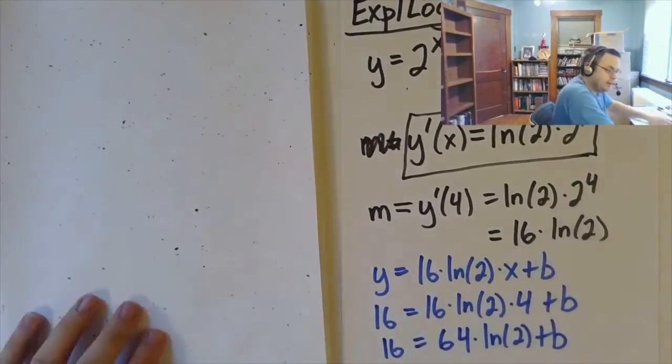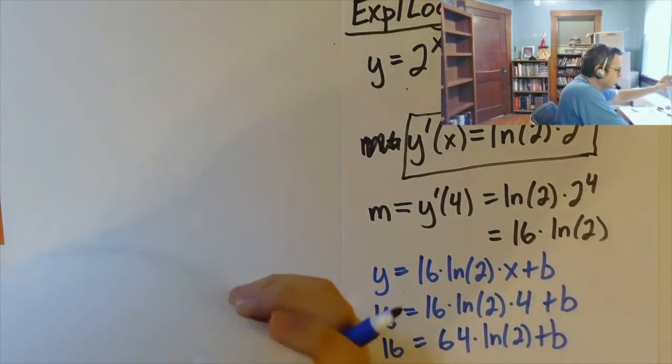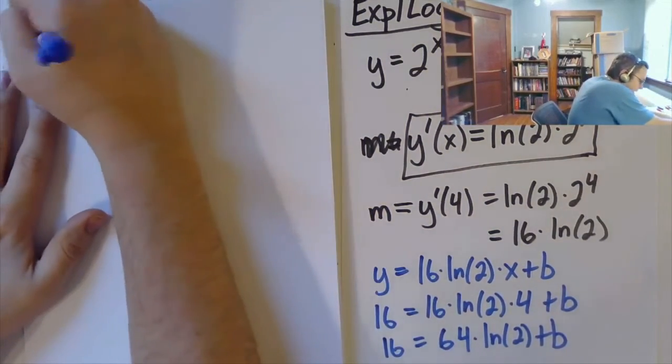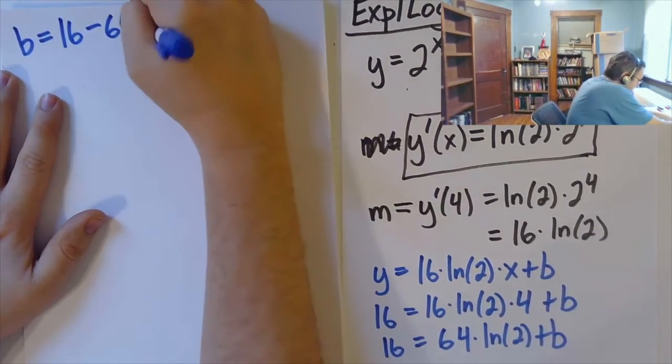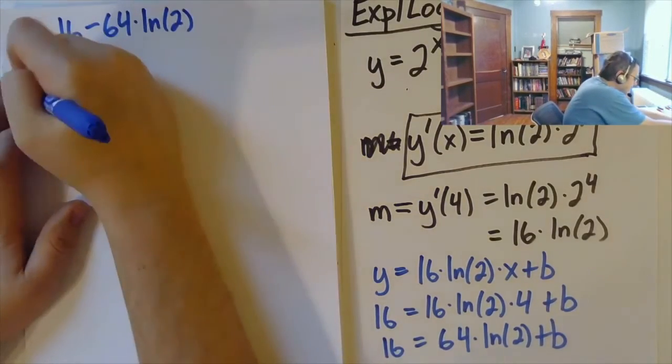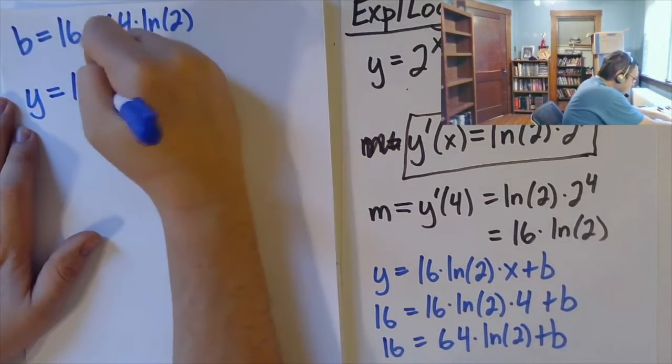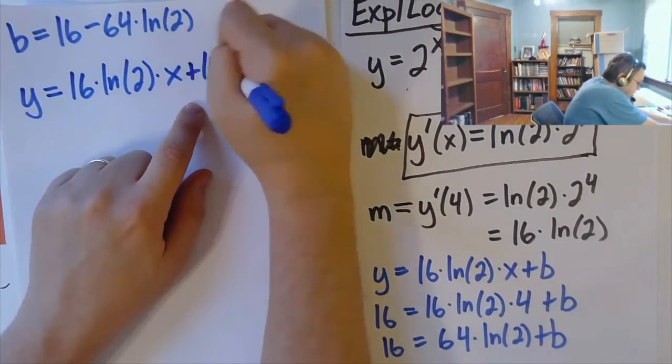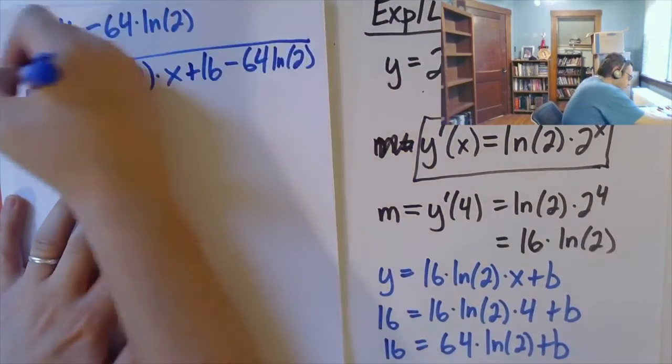So continuing from there, we're going to go ahead and get that b is 16 minus 64 times the natural log of 2. And so what that tells us is that the equation of our tangent line is y equals 16 times the natural log of 2 times x plus 16 minus 64 times the natural log of 2. Okay, which is not beautiful, but it is the answer to the question.